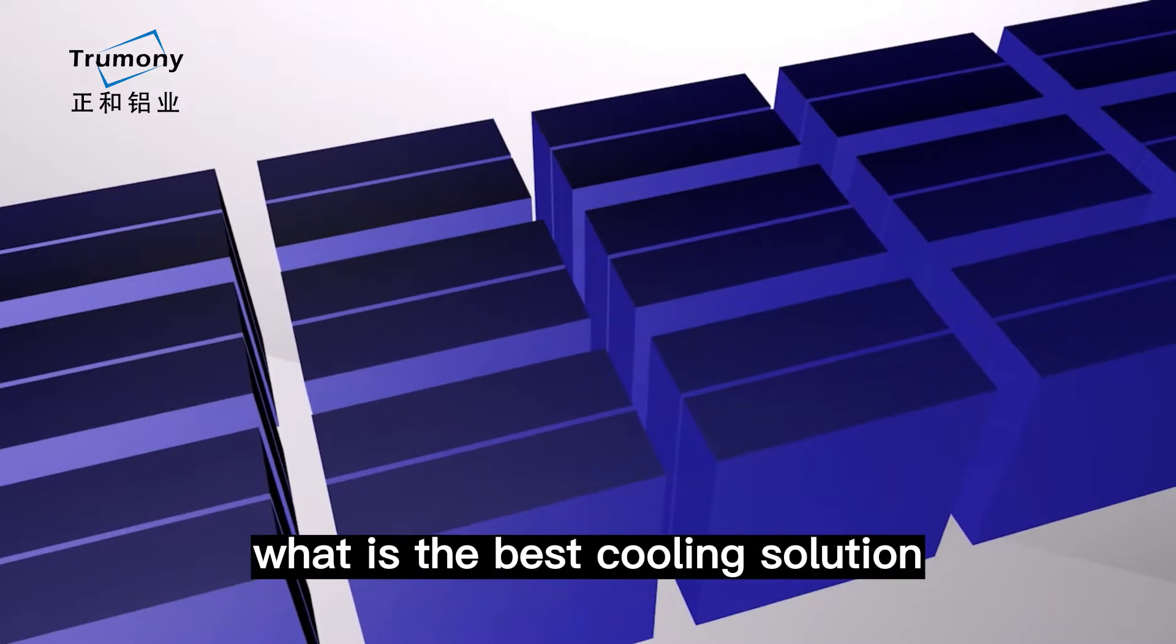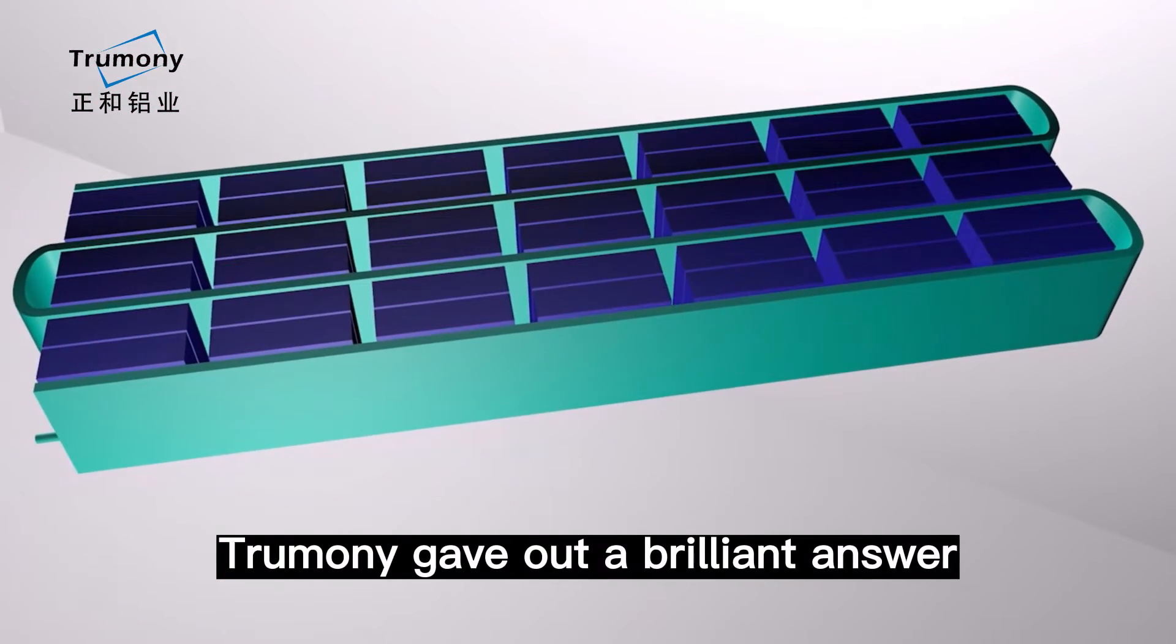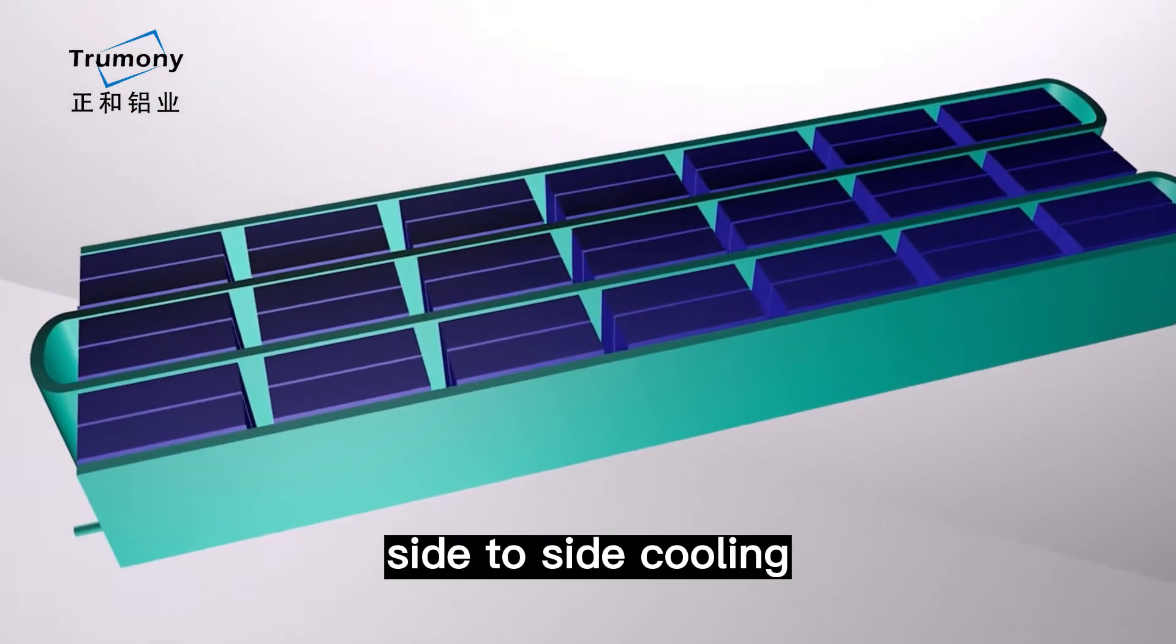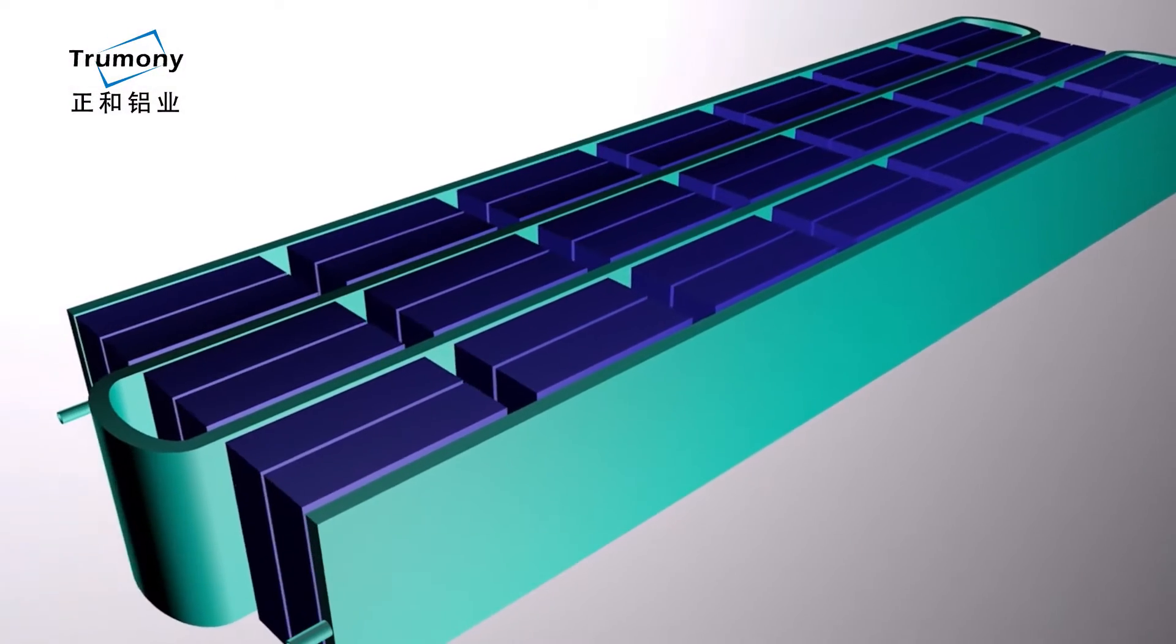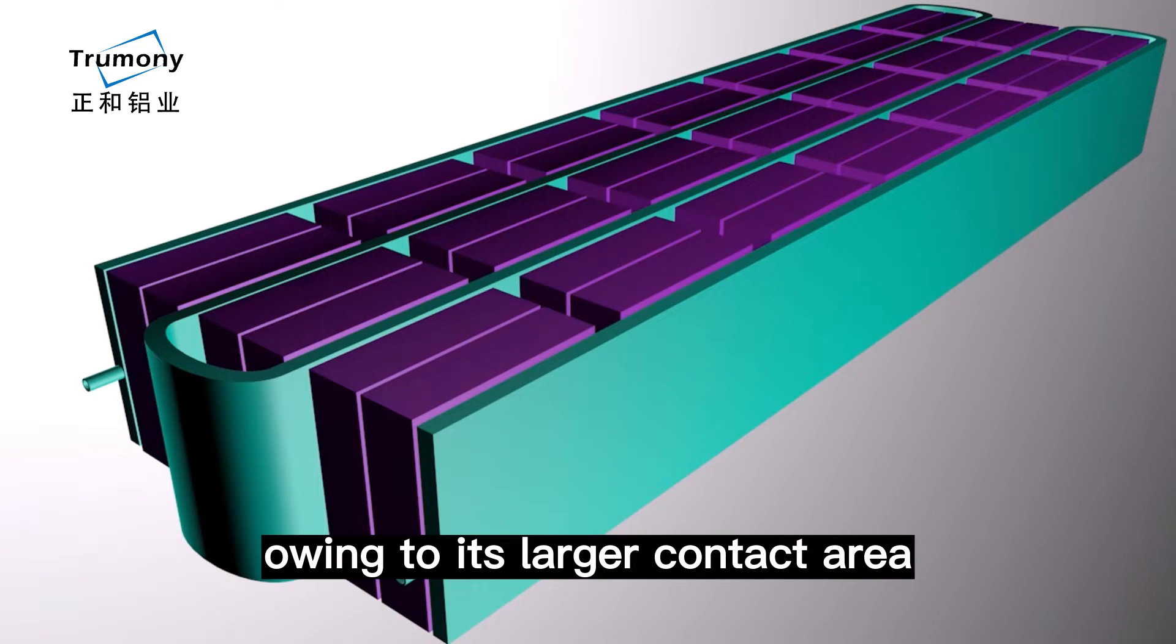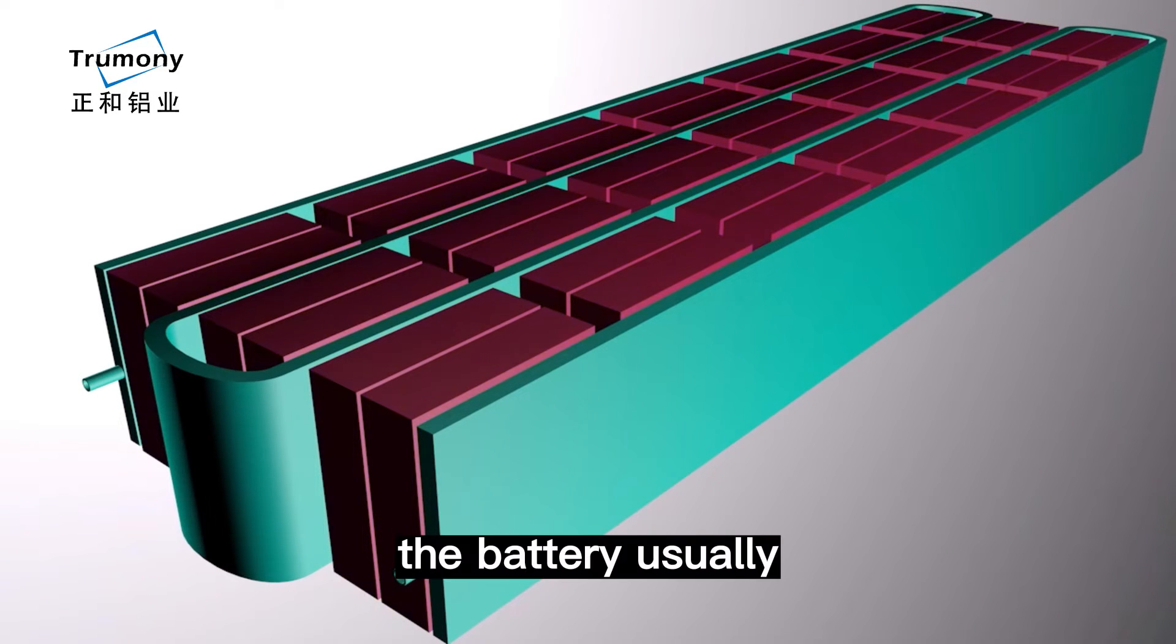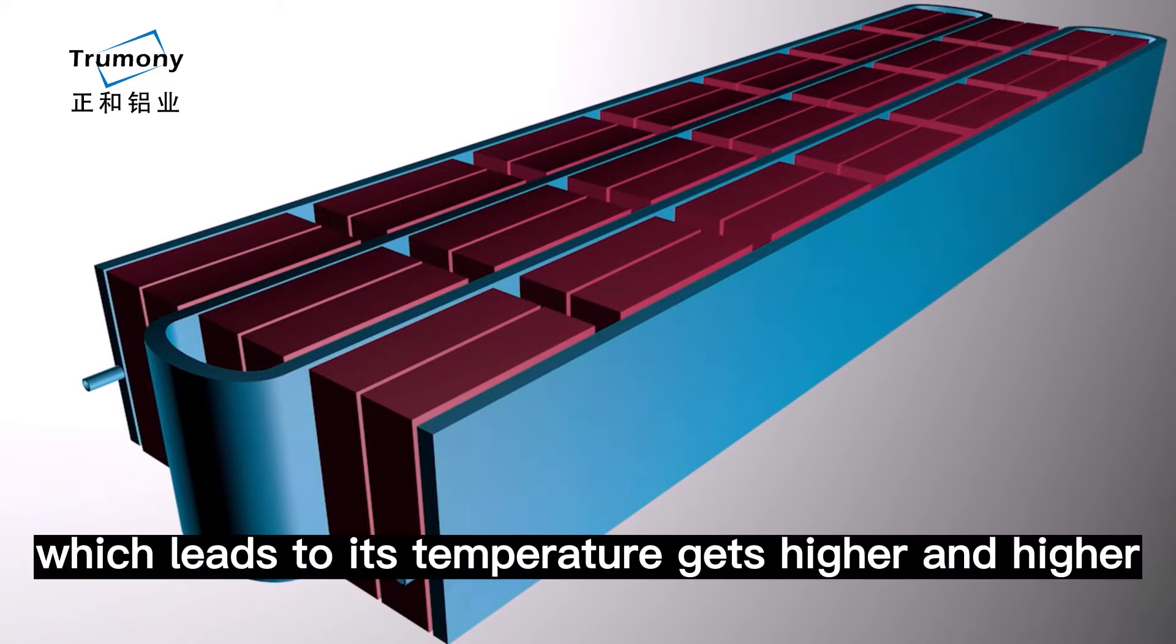What is the best cooling solution for prismatic battery pack? Trumony gave out a brilliant answer: side-to-side cooling. Unlike cooling from the bottom of battery pack, side-to-side cooling has higher heat transfer efficiency owing to its larger contact area. The battery usually generates much heat during its performance, which leads to its temperature getting higher and higher.